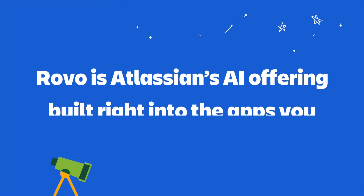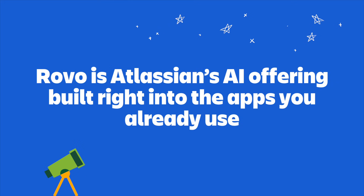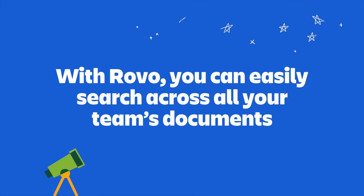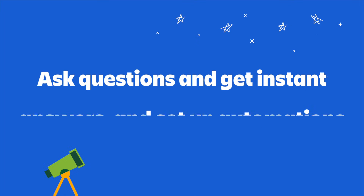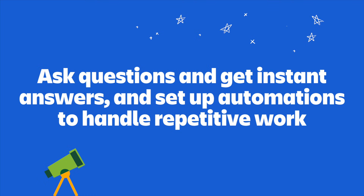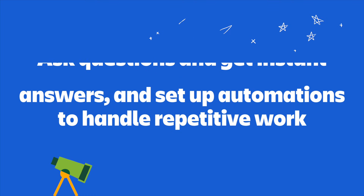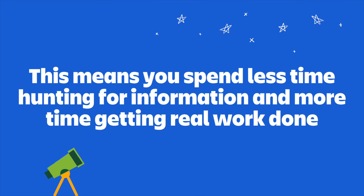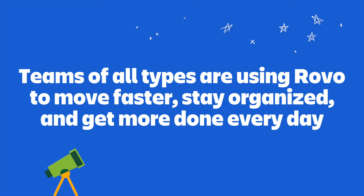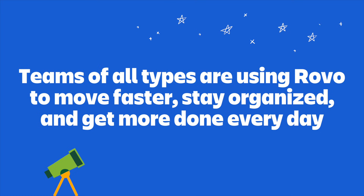Let's do a quick recap. Rovo is Atlassian's AI offering built right into the apps you already use. With Rovo, you can easily search across all your team's documents, ask questions and get instant answers, and set up automations to handle repetitive work. This means you spend less time hunting for information and more time getting real work done. Overall, teams of all types are using Rovo to move faster, stay organized, and get more done every day.